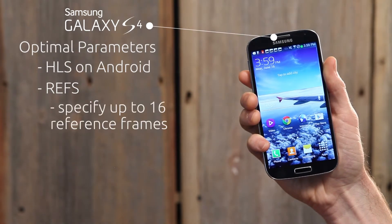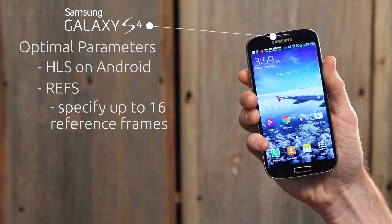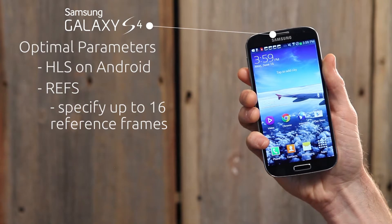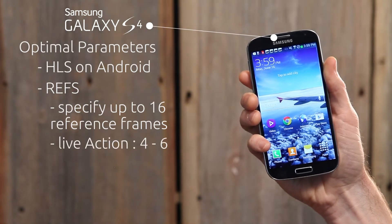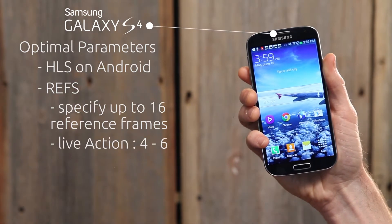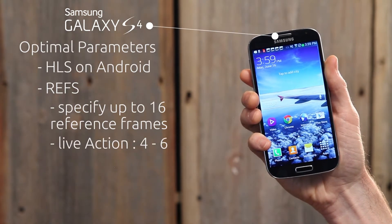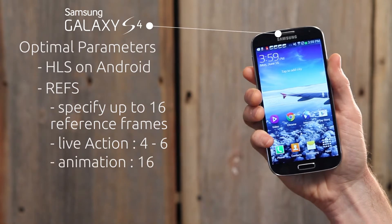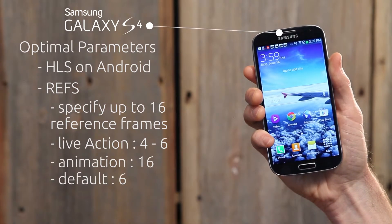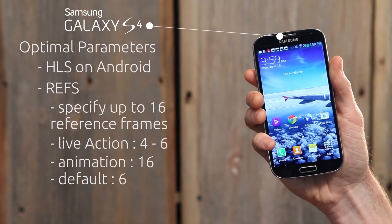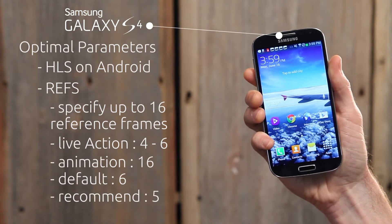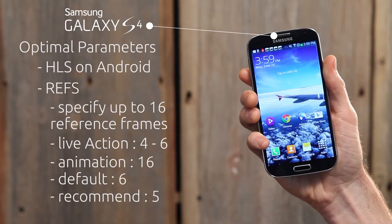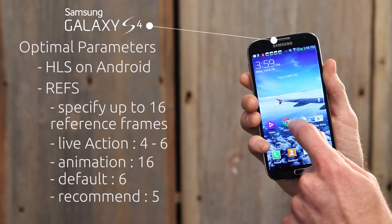Using this parameter, you can specify up to 16 reference frames. For live action, 4-6 reference frames will suffice, but for animation, 16 should be used. Generally, the default is 6 for Android, and we recommend 5.